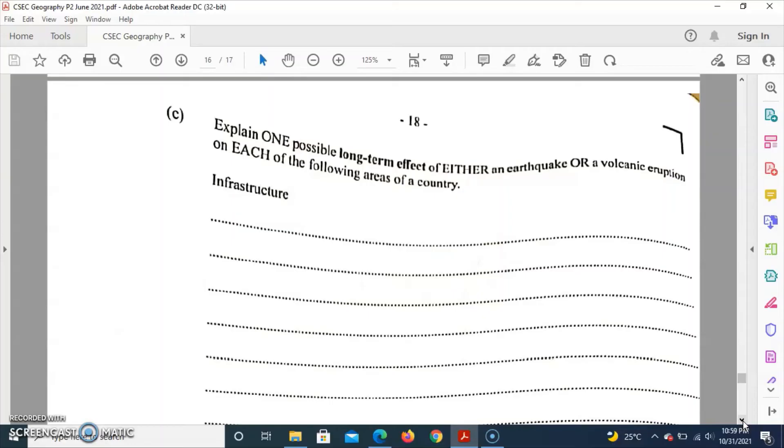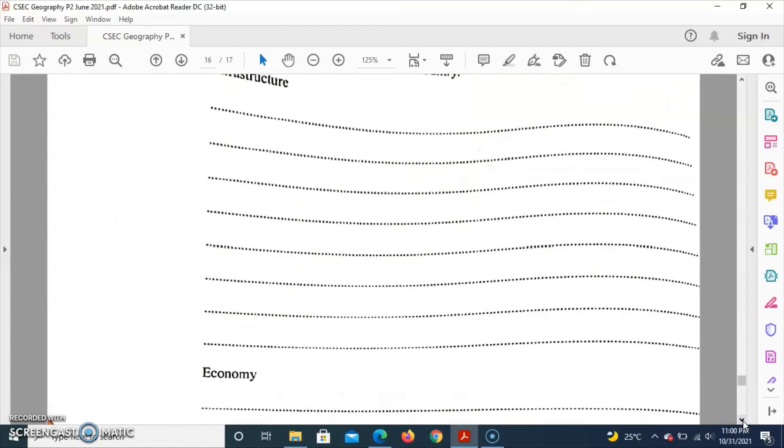As it relates to the economy, the earthquake can basically reduce production in the country, thus reducing the country's revenue. The damages that are sustained from the earthquake will have to be repaired. Hence the funds that the government should be using in the manufacturing department, the government will have to divide that now to basically help in the recovery process.